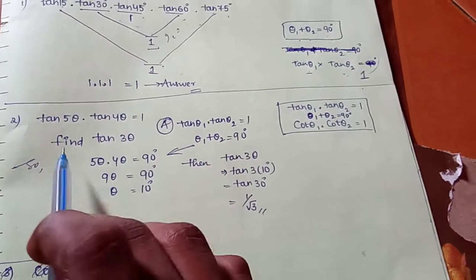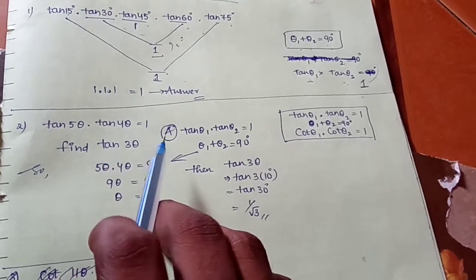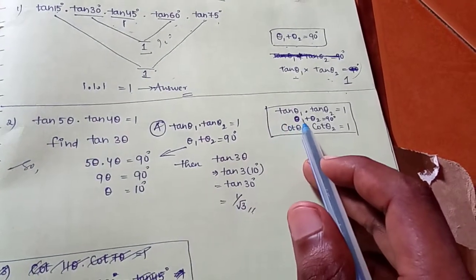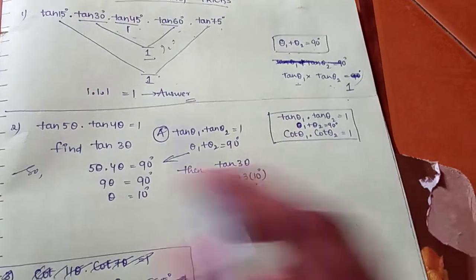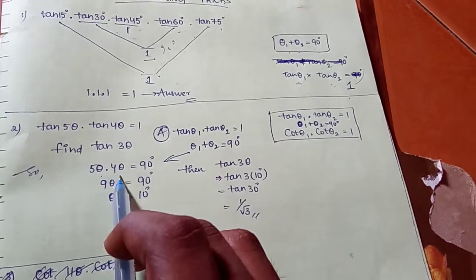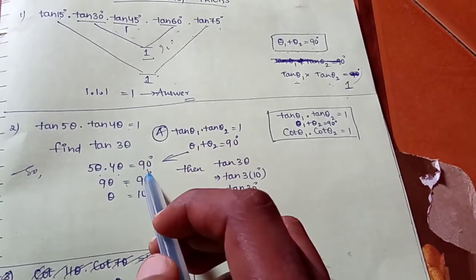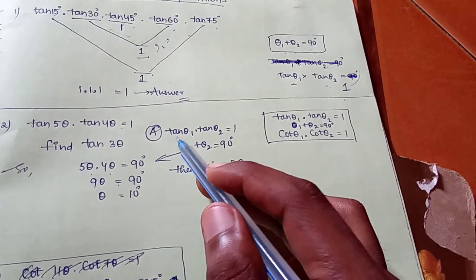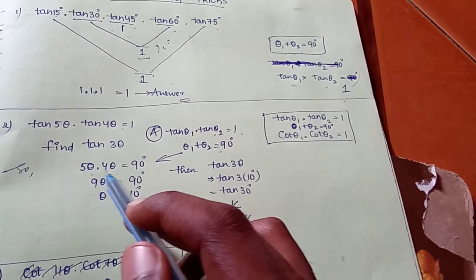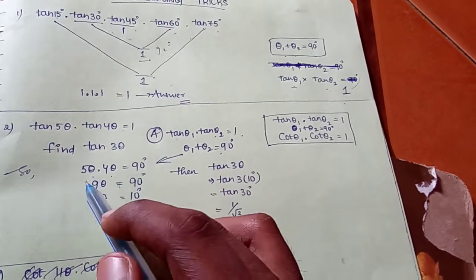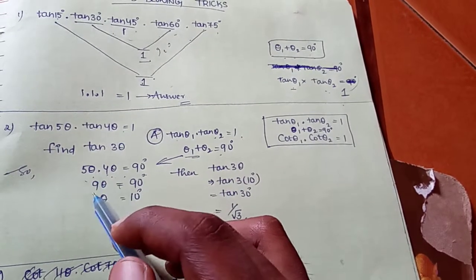Coming to the next one: Tan 5θ × Tan 4θ = 1. The trick is Tan θ1 × Tan θ2 = 1 when θ1 + θ2 = 90 degrees. So 5θ + 4θ = 9θ = 90 degrees.